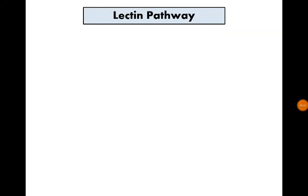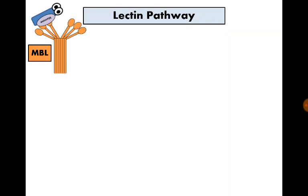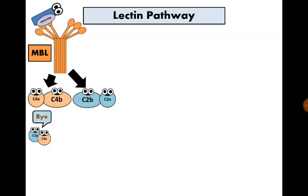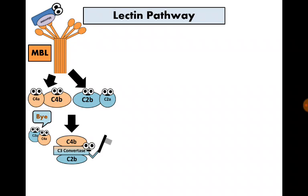The second pathway is the lectin pathway, which differs only in the trigger. The trigger here is an organism carrying mannose on its wall. A compound in serum called the mannose-binding lectin binds to these organisms. This attachment stimulates hydrolysis of C4 and C2 into C4A, C4B, C2A, and C2B, and then C4B and C2B form the C3 convertase.